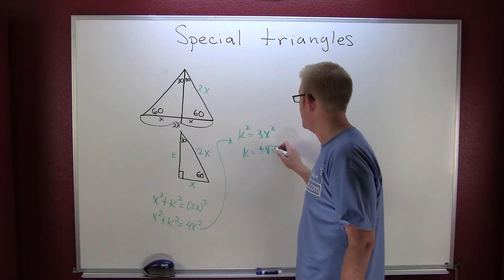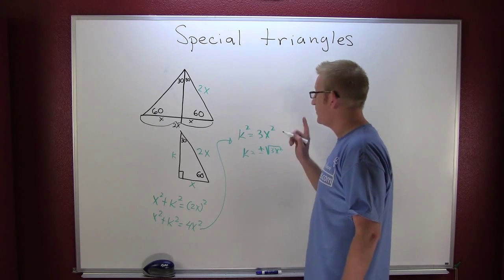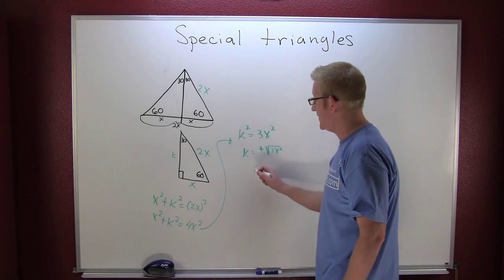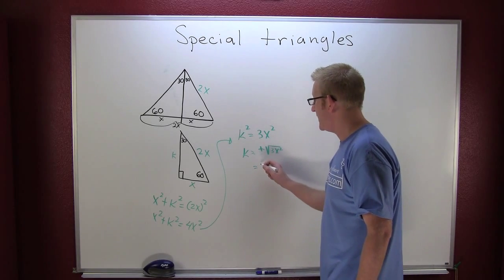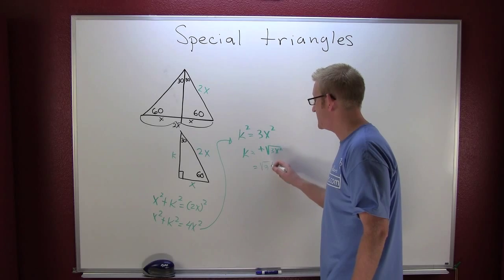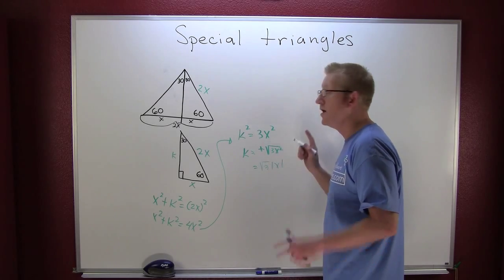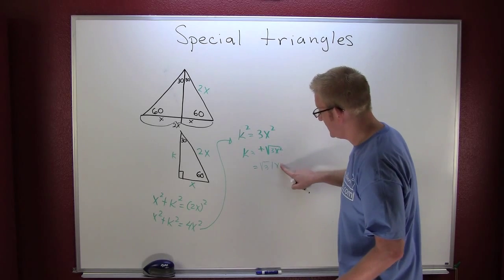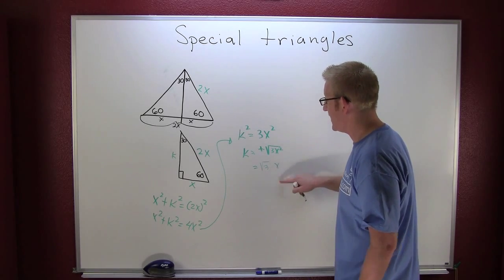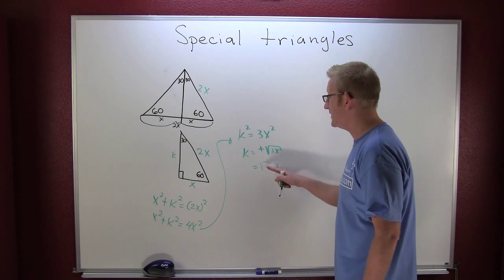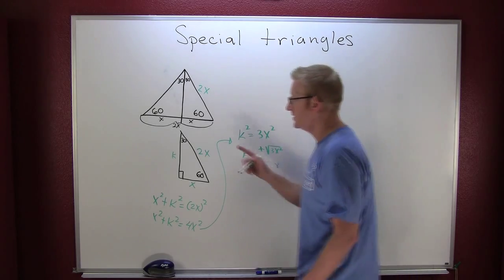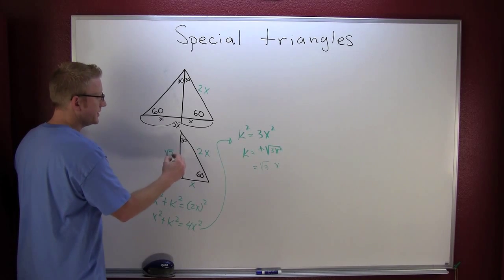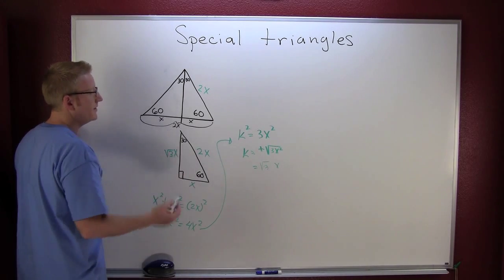I take the square root of both sides and I have k going to be plus or minus the square root of 3x squared. But we're dealing with distance so I don't need to worry about that negative sign. I have the square root of 3 times the absolute value of x, but once again we're dealing with distance, distance is positive, so I don't need the absolute value marks. So I see k going to be root 3x.